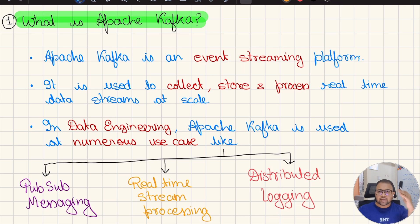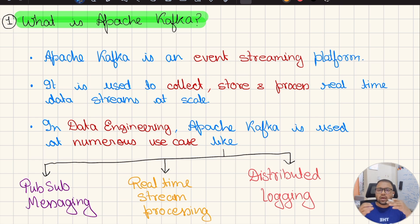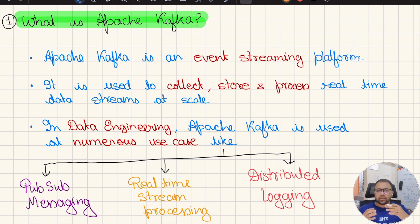The second use case is real-time streaming frameworks. Just like Apache Spark Structured Streaming and Apache Flink, Kafka provides Kafka Streams and Kafka Connect, using which you can actually process streams of real-time data.